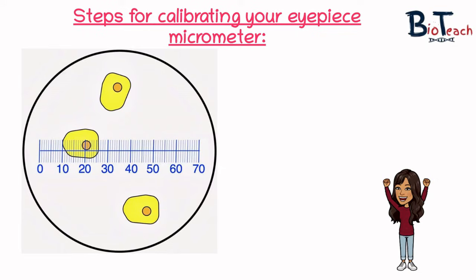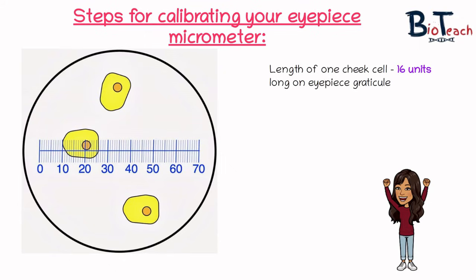For example, looking at the cheek cells on screen, the length of one cheek cell is around 16 units long on the eyepiece graticule. Since one eyepiece micrometer division is 4.8 micrometers long, this cell must be 16 times 4.8, which means 76.8 micrometers long.